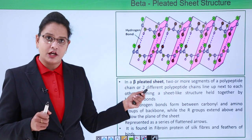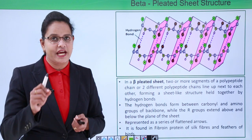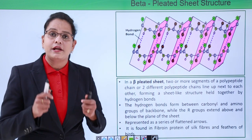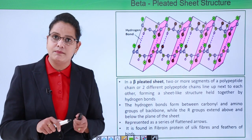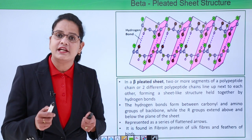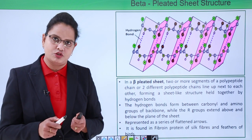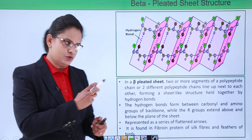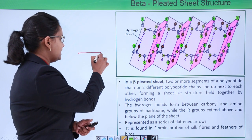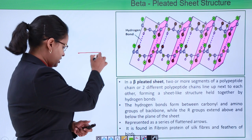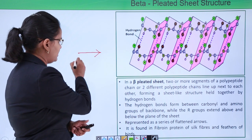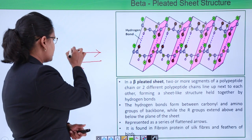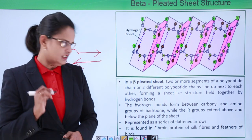The beta pleated structure means it has pleats. Two or more segments of a polypeptide chain interact with each other. They can be segments of the same polypeptide chain or two different polypeptide chains. They are shown in the form of arrows — this is how a beta structure is represented and how they are linked.